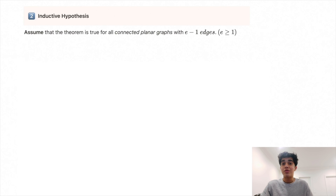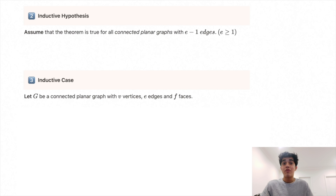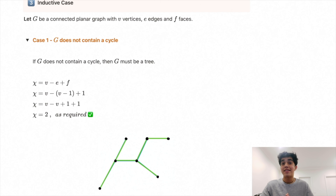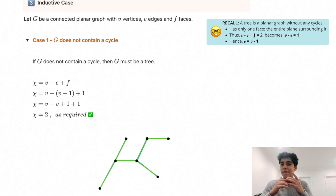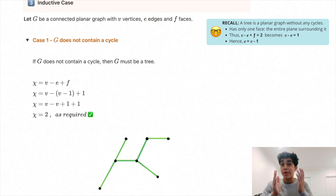Step two — the inductive hypothesis: we assume the theorem is true for all connected planar graphs with E minus one edges. Step three, case one: if graph g does not contain a cycle, then g must be a tree with only one face. We have v minus one edges, so Euler's characteristic becomes v minus (v minus one) plus one, which reduces to two. The formula holds for case one.